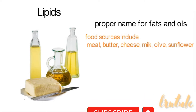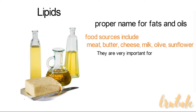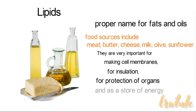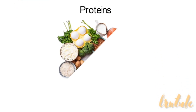Food sources that have high fats and oils include meats, butter, cheese, milk, olive, and sunflower. Usually lipids from animals tend to be saturated fats, while plant lipids are unsaturated. Despite all the negative comments that fats get, they are very important to our body — for making cell membranes, for insulation, for protection of organs, and as a store of energy.